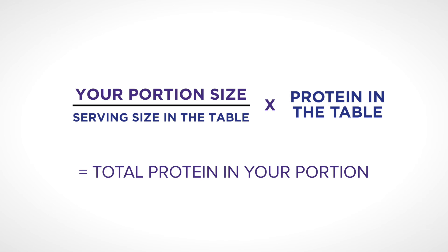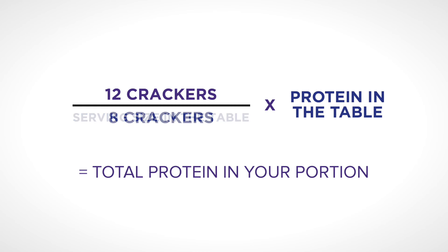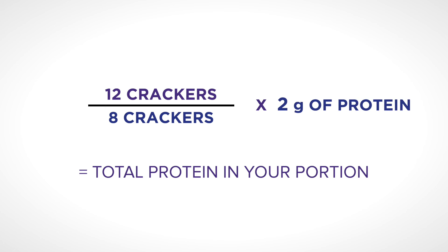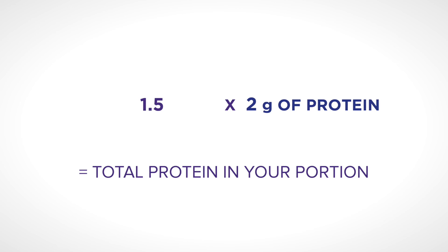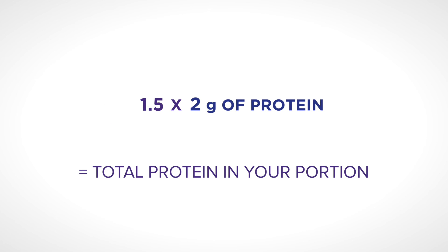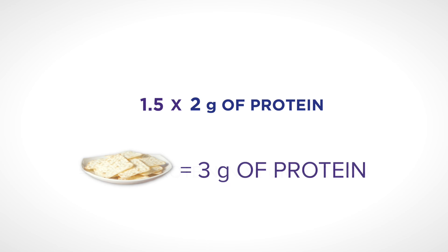Let's give it a try and see what you found. If your answer is 3, you're right. Let's go through the calculation together. Your portion size is 12 crackers, while the serving size in the table is 8. The amount of protein per serving in the table is 2 grams. 12 divided by 8 is 1.5. 1.5 times 2 gives you a total of 3 grams of protein.